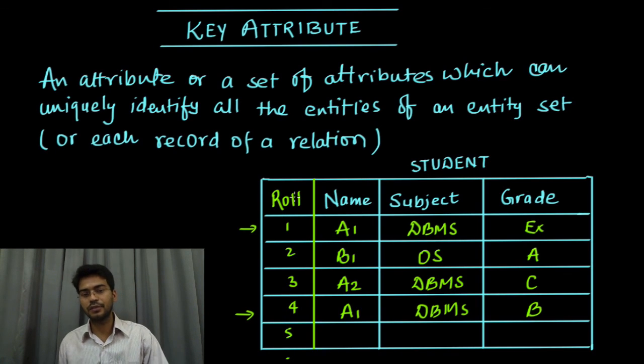We will be learning key attribute in more detail where we will have different kinds of key attributes: super key, candidate key, primary key. All these things we will be learning in upcoming chapters. For now, this is enough to understand the next video. Thanks for watching.